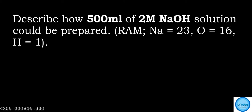Let's see how we can solve this chemistry problem. The question is describing how 500 mls of 2 molar sodium hydroxide solution could be prepared. Sodium has 23, oxygen is 16, and hydrogen is 1.